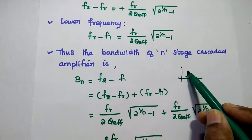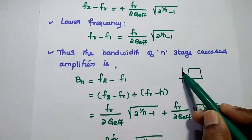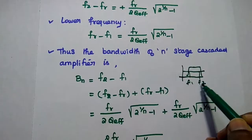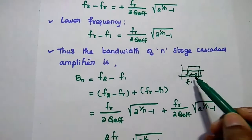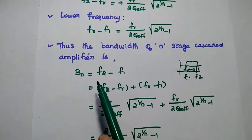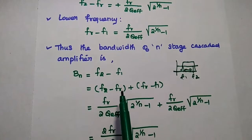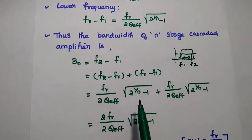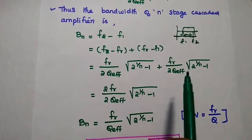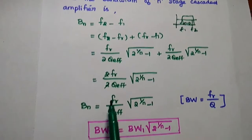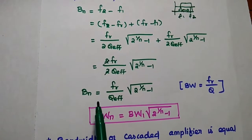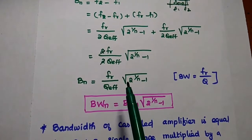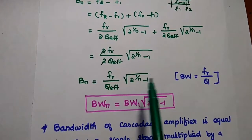As we know, bandwidth is the 3 dB bandwidth, defined as f_2 minus f_1. We can write f_2 minus f_1 as (f_2 minus f_r) plus (f_r minus f_1), then substitute the values to get 2 times that expression. The bandwidth for an n-stage cascaded amplifier equals f_r divided by Q_f(active), times √(2^(1/n) minus 1).